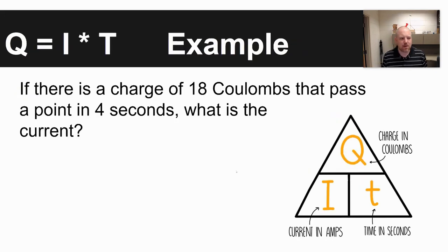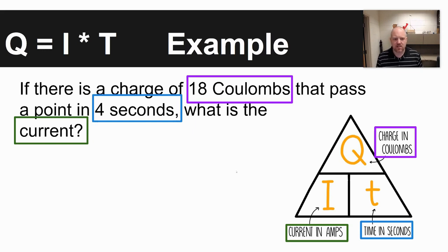Just another example problem. It says if there is a charge of 18 coulombs that pass a point in 4 seconds, what's the current? Step number one, identify the different units in this problem. We have 18 coulombs, that's a unit of charge. We have 4 seconds, that's a unit of time. And you're asked to solve for current.